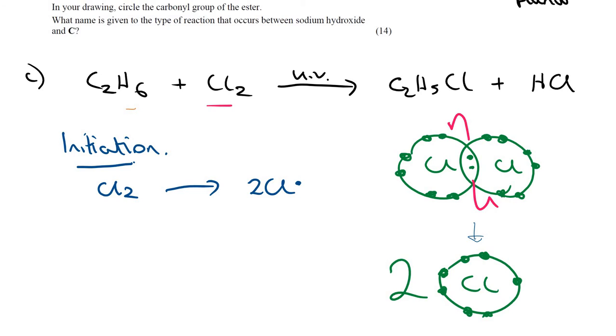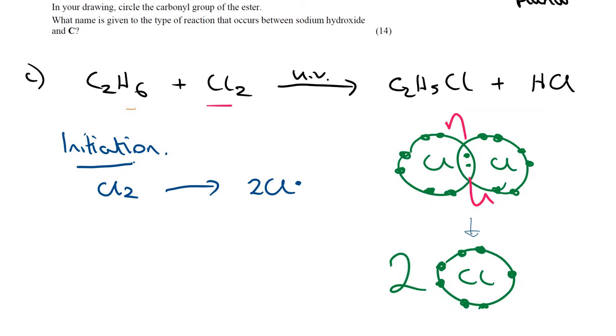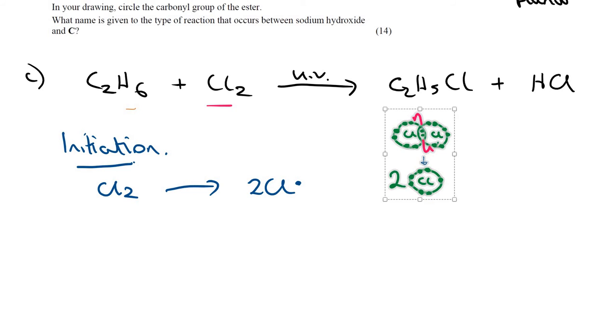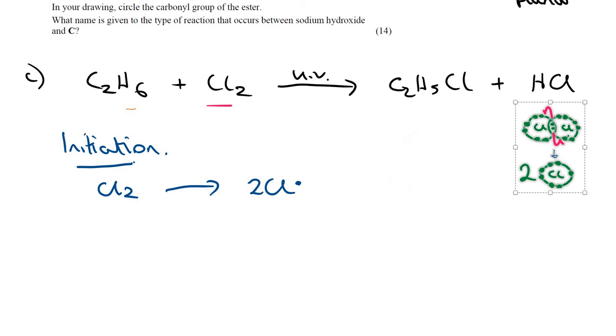Free radicals themselves are quite reactive, so they can react with other molecules. In many ways, its chemistry is hard to control. The UV light breaks apart the shared electron pair, and you form two chlorine atoms. We're going to call them free radicals.